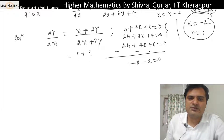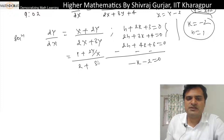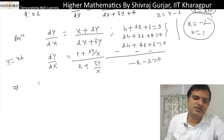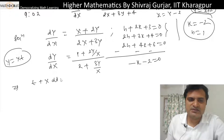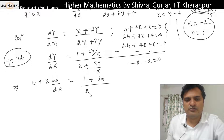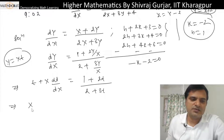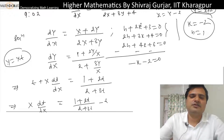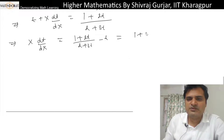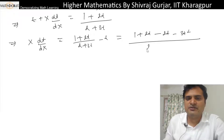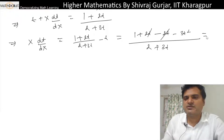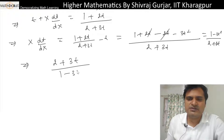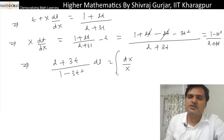So small x = capital X - 1 and small y = capital Y + 2, meaning capital X = x - (-1) = x + 1 and capital Y = y + 2. Again dividing throughout by X: dY/dX = (1 + 2t)/(2 + 3t) where t = Y/X. So t + X·dt/dX = (1 + 2t)/(2 + 3t).